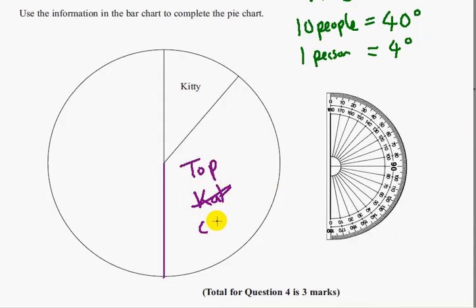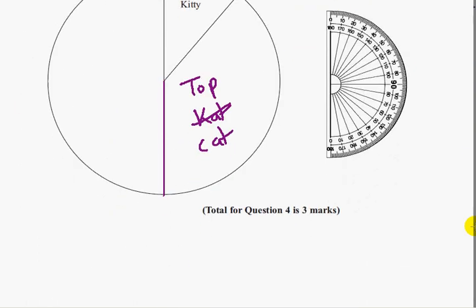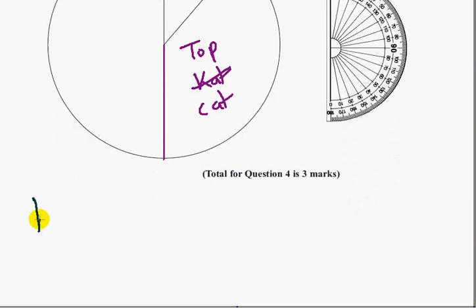So next is going to be catkins. So catkins has 30 people, times by 4 degrees. That's 120 degrees of the pie.